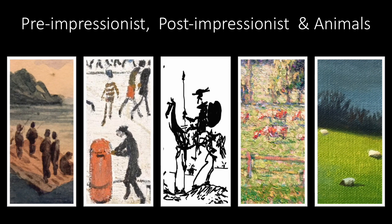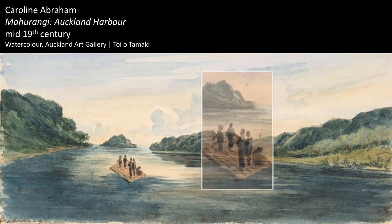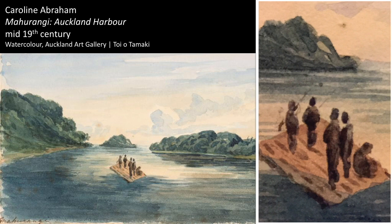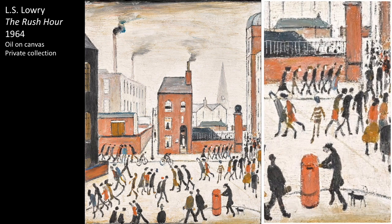It's not just the Impressionists who did this — there's pre-Impressionist work and post-Impressionist work, and let's also look at some animals. This painting long before Impressionism by Caroline Abraham shows five people on a raft — if you look at them they're just blobs of paint, so this idea of abstraction predates Impressionism. Lowry is in some sense an Impressionist, populating his cities with abstracted human figures, and you can still work out that that's a man posting letters with a dog beside him.